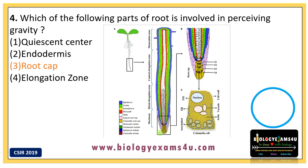The root cap has a meristematic region, and it contains a special type of cell called columella cells, which are responsible for perceiving gravity. There are also amyloplasts involved. So next time this may be a question — you need to understand a little more from the given options.